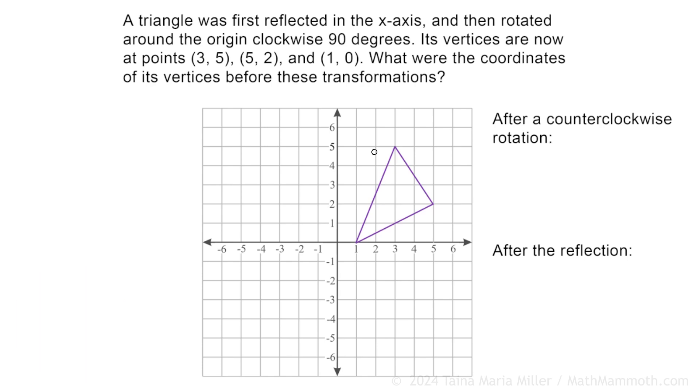So this triangle was first reflected in the x-axis and then rotated around the origin clockwise, 90 degrees. And its vertices are now here, these three points. And what were the coordinates of its vertices before these transformations?